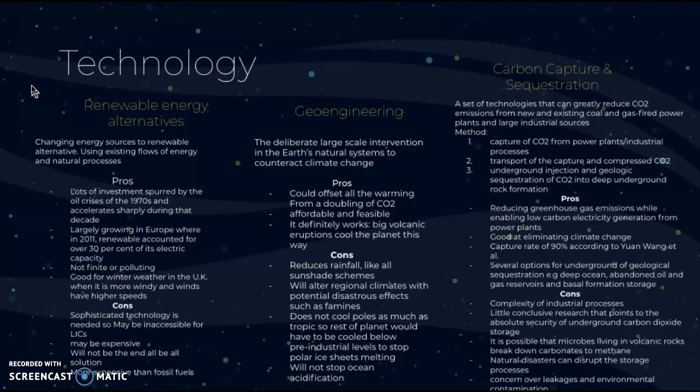Geoengineering is the deliberate large-scale intervention in the Earth's natural systems to counteract climate change. One pro is that it could offset all the warming from a doubling of carbon dioxide.